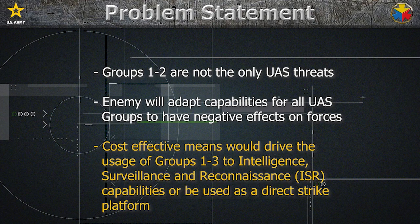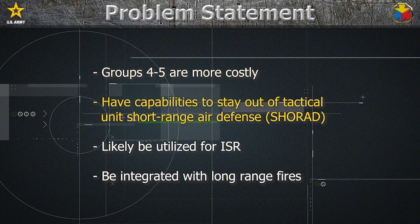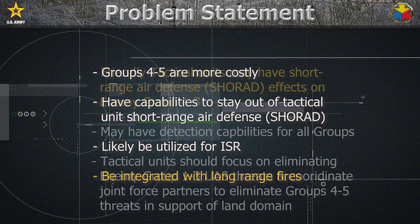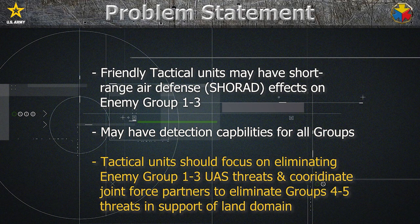Likely, cost-effective means would drive the usage of Groups 1 through 3 to have intelligence, surveillance, and reconnaissance capabilities, or to be used as a direct strike platform. Groups 4 and 5, being more costly and having capabilities to stay outside the range of short-range air defense, will likely still be utilized for ISR and integrated with long-range fires. Friendly tactical units may likely have short-range air defense effects on Groups 1 through 3 and may have detection capabilities for all groups. Generally, tactical units should focus on eliminating enemy Groups 1 through 3 UAS threats and coordinate joint force partners to eliminate Groups 4 and 5 in support of the land domain.